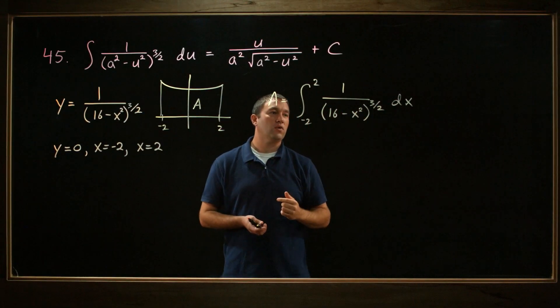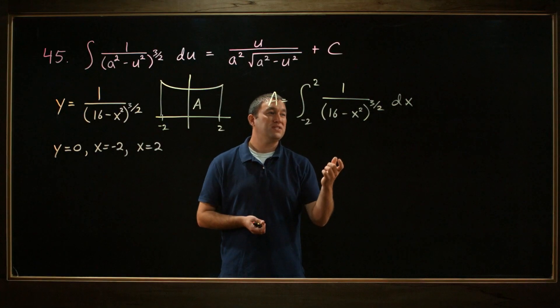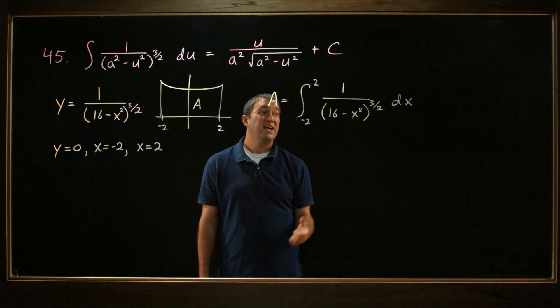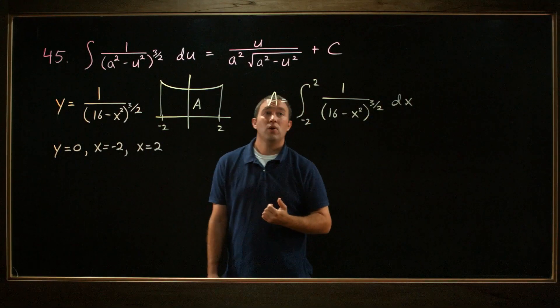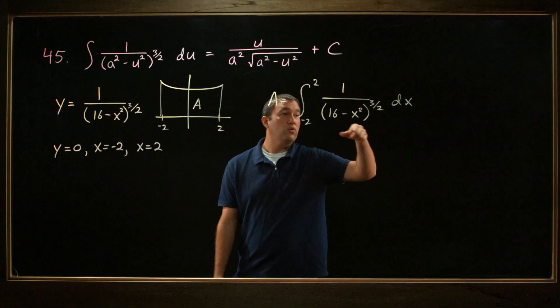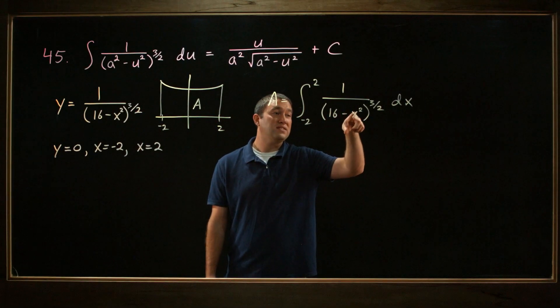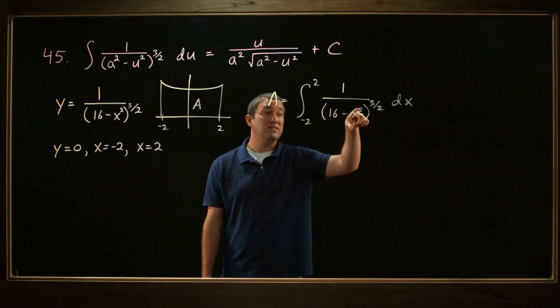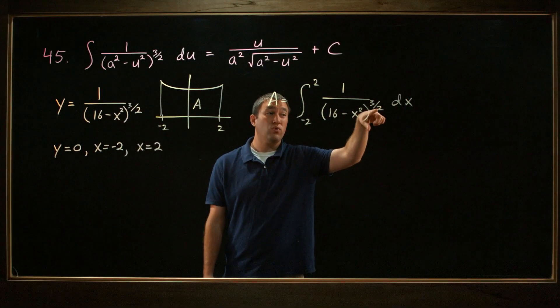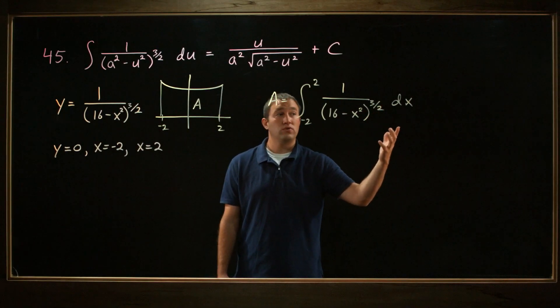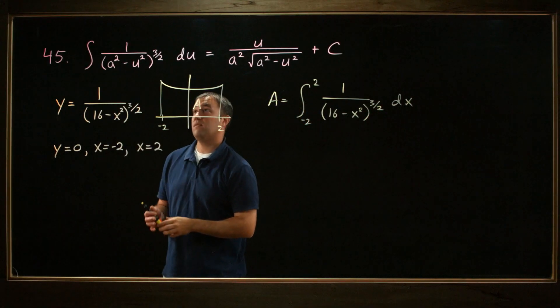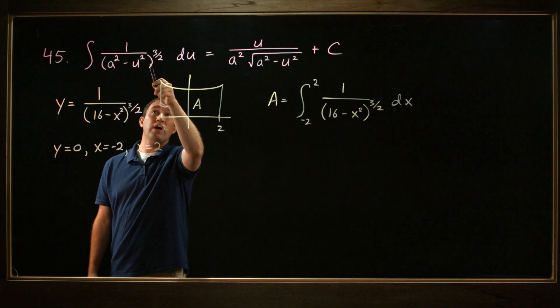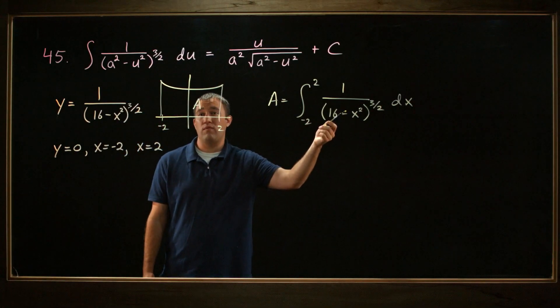Now when we see this integral, we might be thinking to ourselves, this looks like a challenging integral. Maybe I should use my table of integrals back in Appendix B. And that's going to work out pretty nicely in this case. We've got a lot of integrals that look like this, a constant minus a variable squared. But we want to look for one specifically that has a constant minus a variable squared, raised to 3 halves in the denominator. If you look at your table of integrals, you can find number 45 has this formula, 1 over a constant squared minus a variable squared, all raised to the 3 halves. And that's pretty much what we have right here.